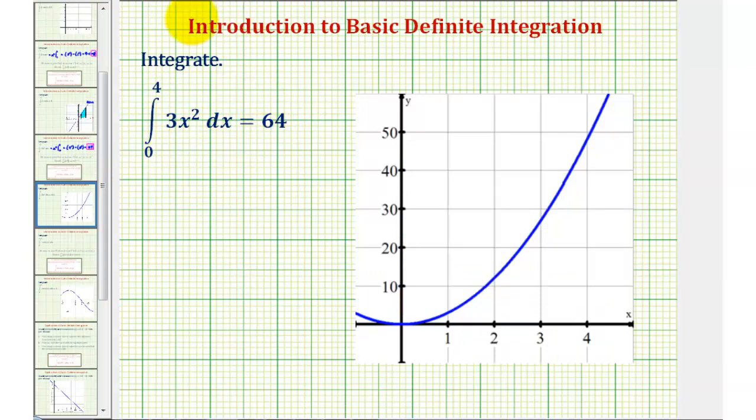Again, because this value is equal to 64, if we shade the area on the interval from zero to four, below the function and above the x-axis, the area of the shaded region here would be exactly 64 square units.